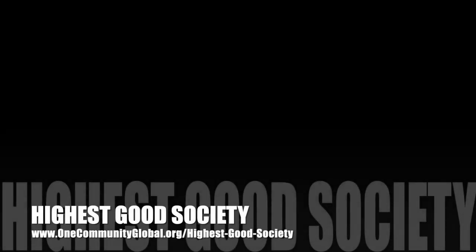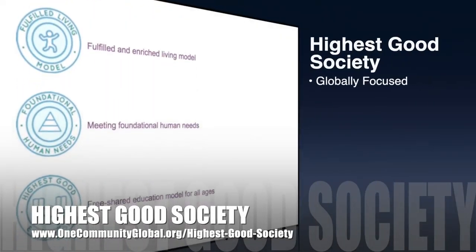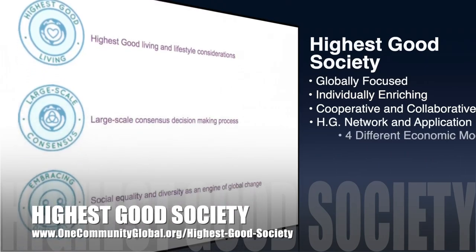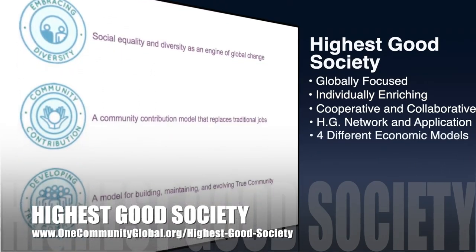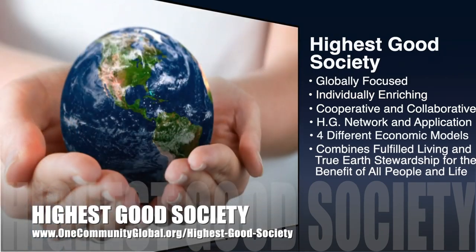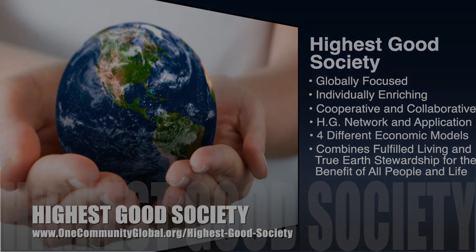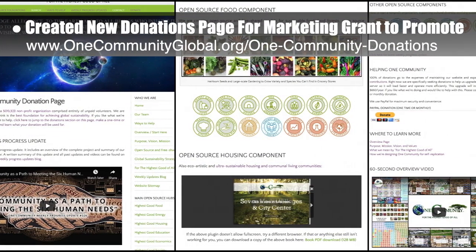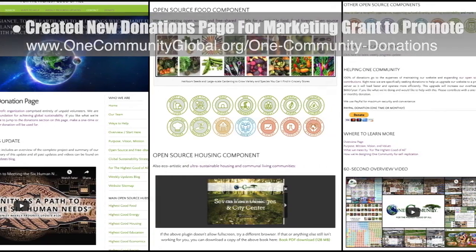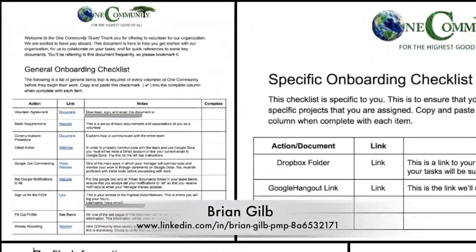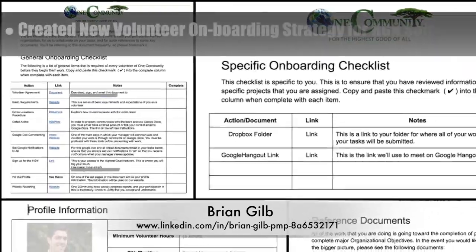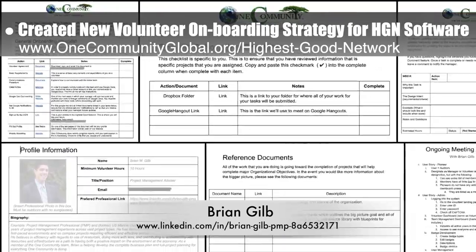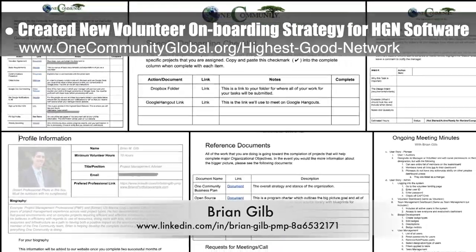One Community's approach to Highest Good Society is globally focused, individually enriching, cooperative and collaborative, includes a Highest Good network and application, four different economic models, and combines fulfilled living and true earth stewardship for the benefit of all people and life on this planet. This week, the core team created a new donations page to promote using a marketing grant. Working with Brian Gilb, project management professional, the team also created a new volunteer onboarding strategy and process, and finished the administrator user functionality of the Highest Good network software.